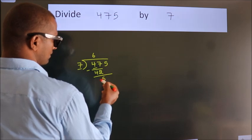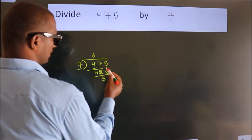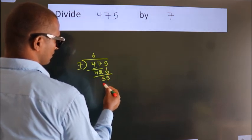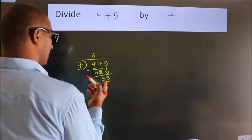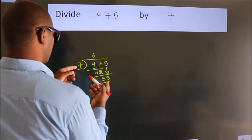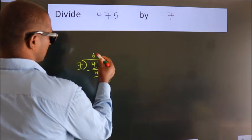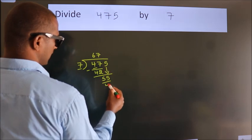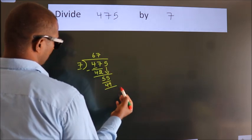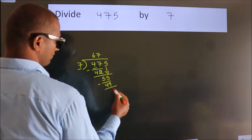After this, bring down the next number. So 5 down. So 55. A number close to 55 in the 7 table is 7 times 7, 49. Now we subtract, we get 6.